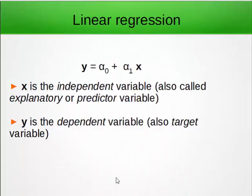So just some terminology. In this equation x is called the independent variable, sometimes also called explanatory or predictor variable. Y is the dependent variable, sometimes also called target variable.